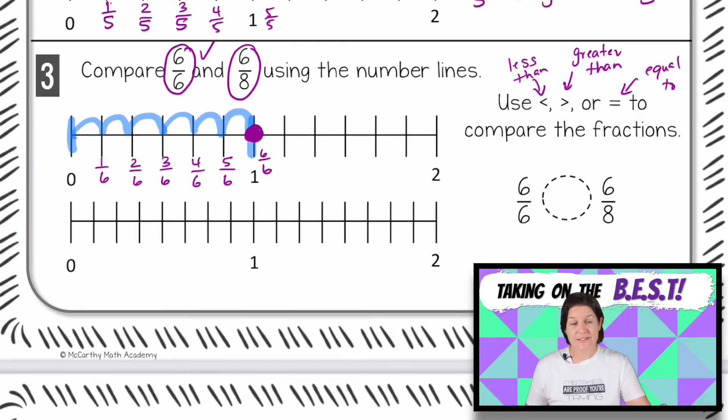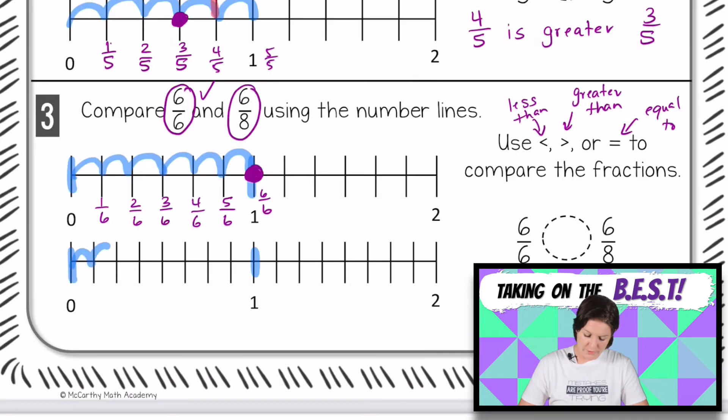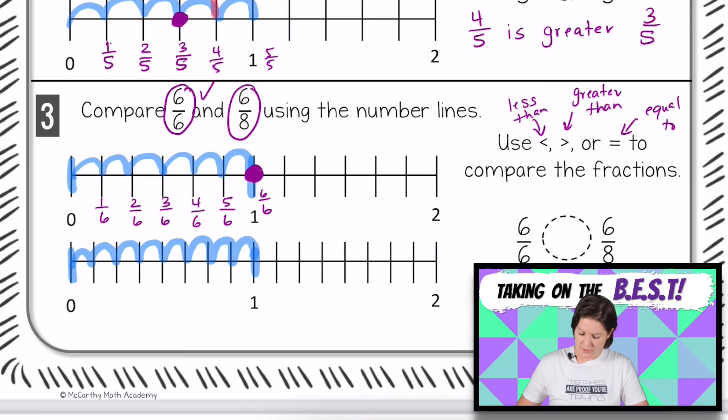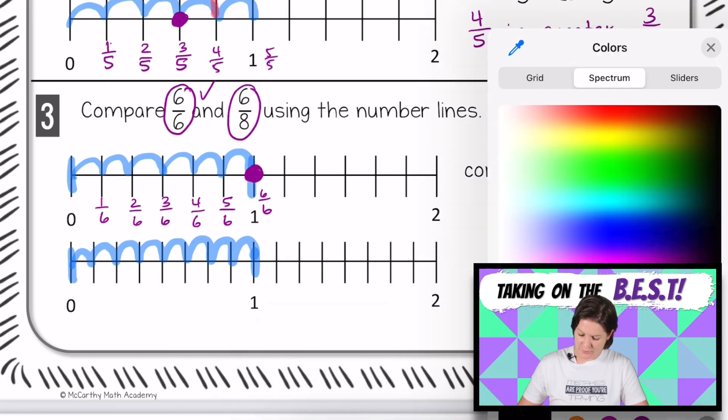And now we need to plot 6/8. Okay, so here's our two whole numbers. We should have eight equal jumps between each whole because our denominator is eight. But let's check just to make sure. We've got 1, 2, 3, 4, 5, 6, 7, 8. Yes, there are eight equal jumps between each whole.